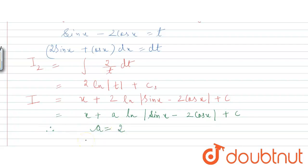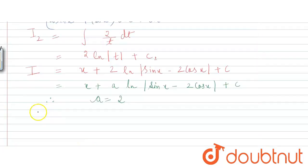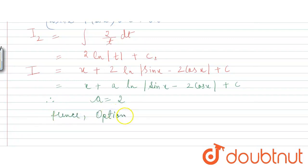So our final answer: comparing with x plus a·log|sin x minus 2 cos x| plus k, we get a equals 2. Hence option 4 is correct, that is a equals 2.